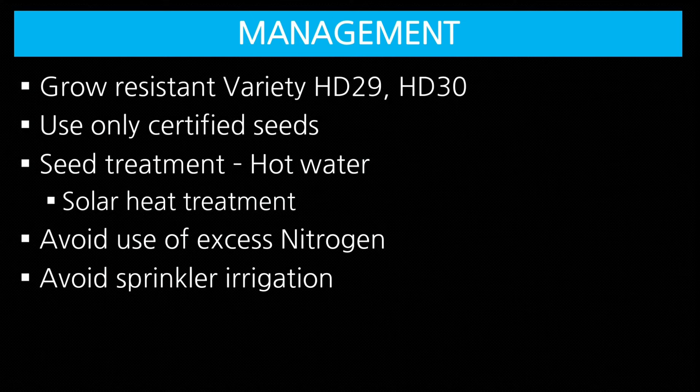Management of Karnal bunt: Adopt integrated disease management. Grow resistant varieties HD 29 and HD 30. Use only certified seeds from reliable sources. Seed treatment: hot water treatment at 52°C for 15 minutes, or solar heat treatment.